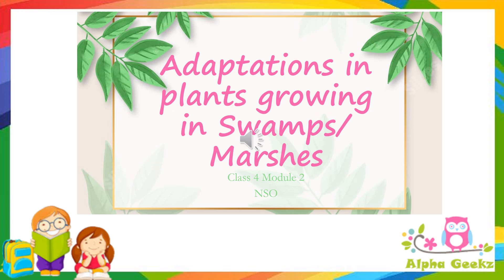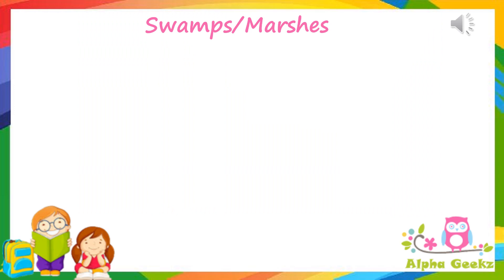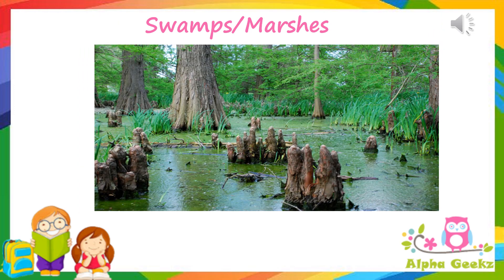Hello kids, welcome to Alpha Geeks. Let's study the adaptations in plants growing in swamps or marshes. Swamps or marshes are wetlands — areas where water covers the soil surface for varying periods of time during the year.